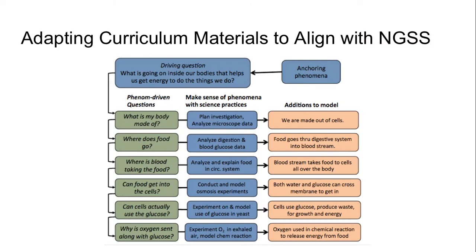One well-known research-based method for adapting science curriculum comes from Brian Reiser and colleagues at Northwestern. In this method, teachers use an anchoring phenomenon, seen in the top right, to guide a driving question and phenomenon-driven questions that anchor students' thinking throughout the unit. Throughout, students use sense-making activities and they add to a model that they and their fellow students hold to make sense.